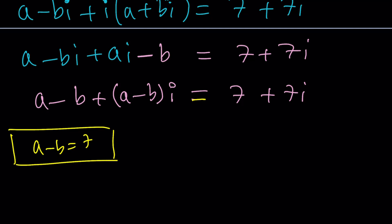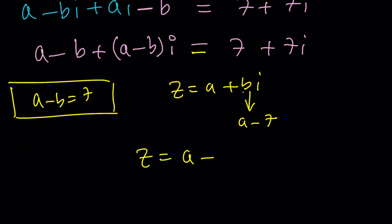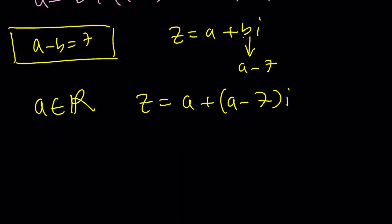So basically, your solutions are going to be in the form of Z equals A plus B I, such that A minus B is 7. So how do you express that, though? If you wanted to stick to A and just change to B, B from here is going to be A minus 7. So you can write your Z as A plus (A minus 7)I, where A is a real number. So A can be anything, pretty much, as long as it's a real number. It can't be I. It can't be 3 plus 4I. It has to be real.